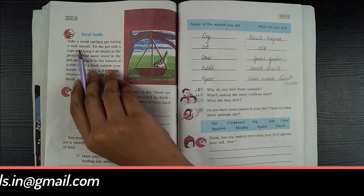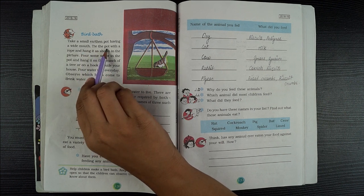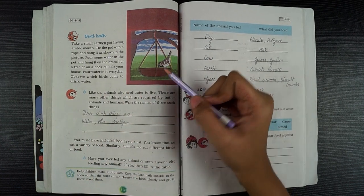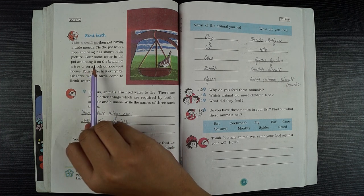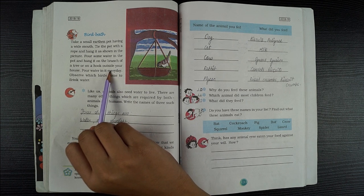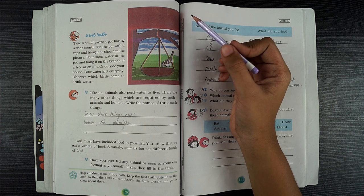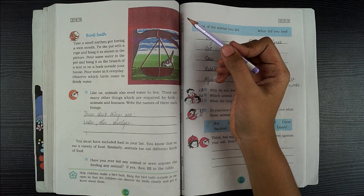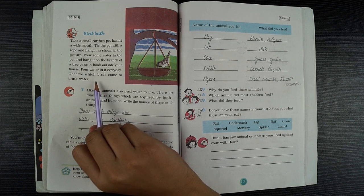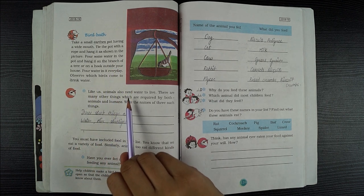Bird bath. Take a small earthen pot having a wide mouth. Tie the pot with a rope and hang it as shown in the picture. Pour some water in the pot and hang it on the branch of a tree or on a hook outside your house. Change the water and observe how many birds drink water.